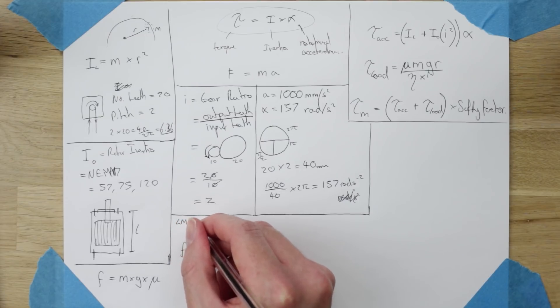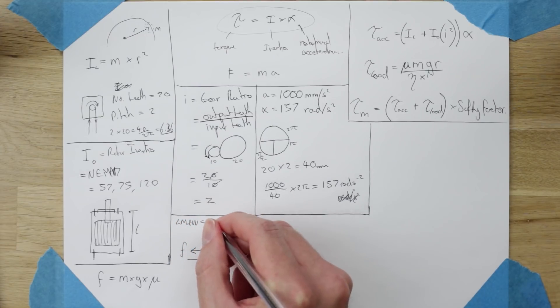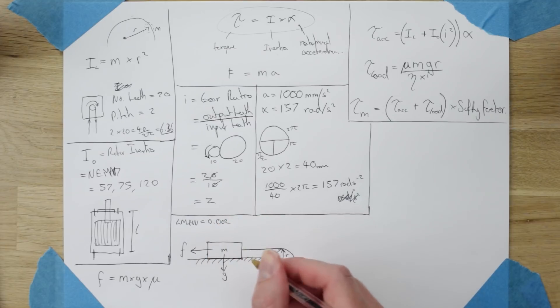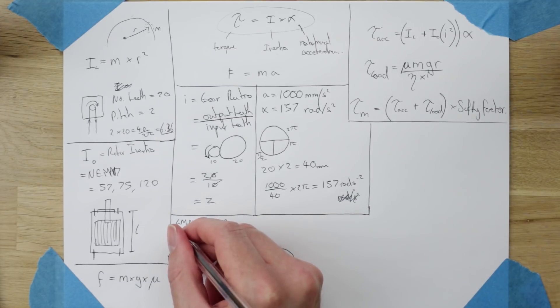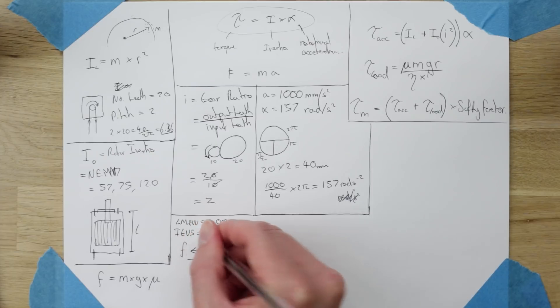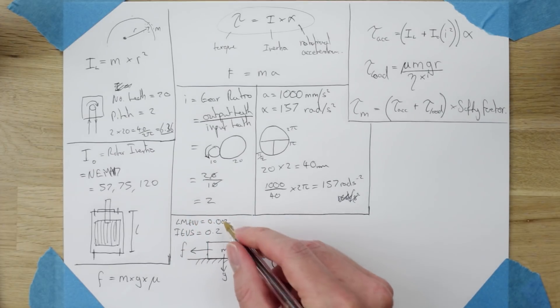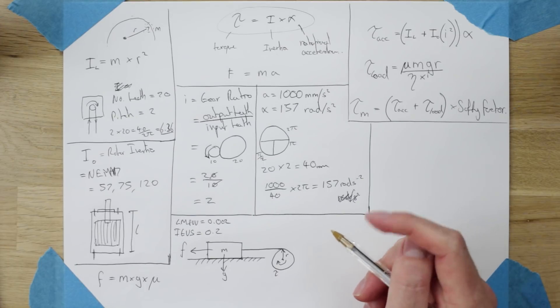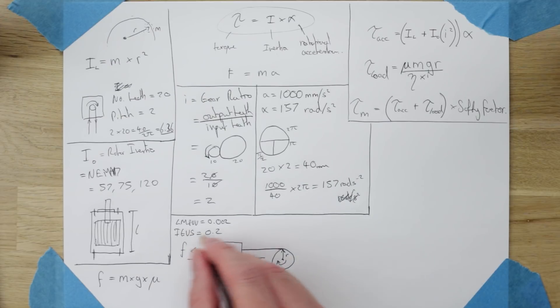This is where we're looking at the difference between an LM8UU or something like an igus bushing. So to give you an idea, LM8UU if I remember correctly is about 0.002, and an igus bushing is in the region of 0.2. So you can see there's quite a significant difference in the friction coefficient of these materials, but this is for a proper LM8UU not a Chinese one which will undoubtedly be less good. Obviously each igus bushing is different and each LM8UU bought from different places will probably be slightly different as well. This is assuming we're in contact with a steel rod.